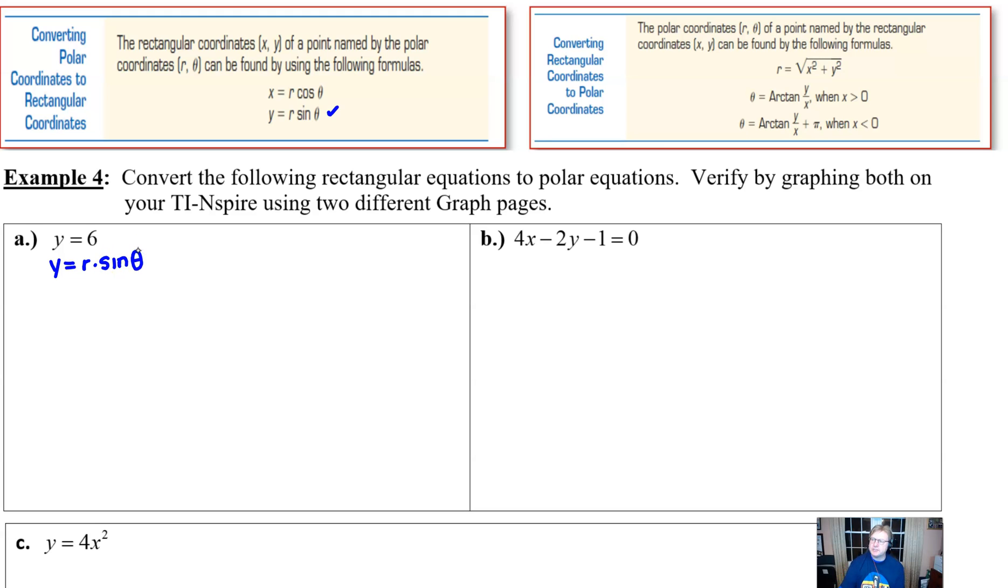Just using a simple substitution. If y is equal to 6 and y is equal to r sine of theta, then we know that 6 is the same as r times the sine of theta. Now, what that's going to allow us to do is to solve for r, get r all by itself by dividing both sides by sine, and let's face it, that is the goal.